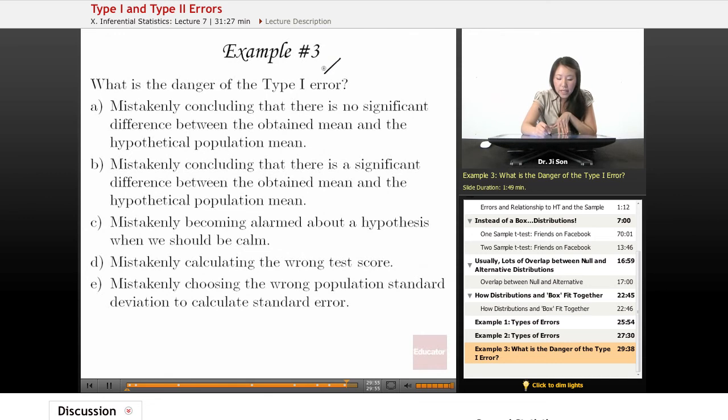Well, when you make a type 1 error, you have rejected the null. Right? But null hypothesis is true.